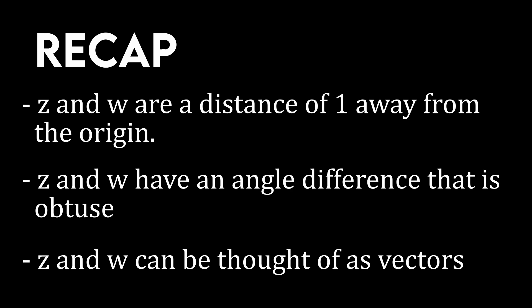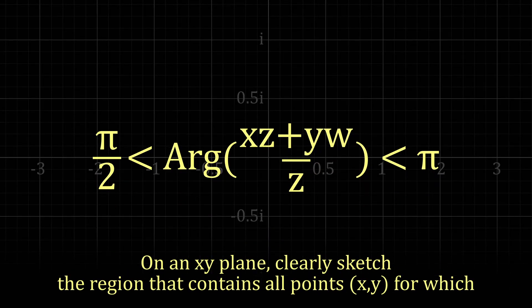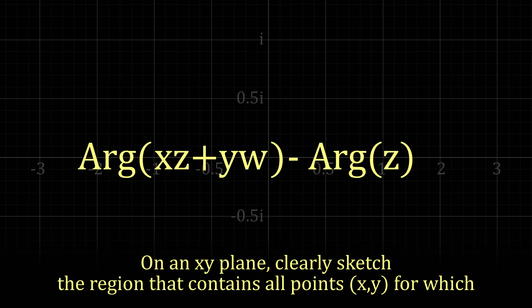Let's move on to the next section. We're trying to find the values for x and y in which the argument of xz plus yw divided by z is in between pi divided by 2 and pi. If we deconstruct this expression, we can reinterpret this intimidating equation. We can use argument identities to rewrite this expression as a subtraction.